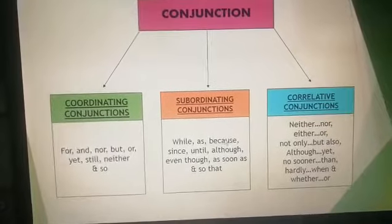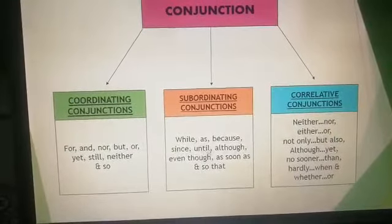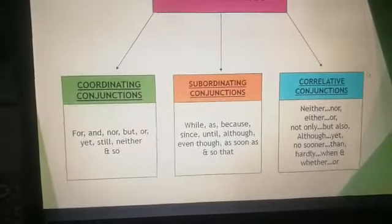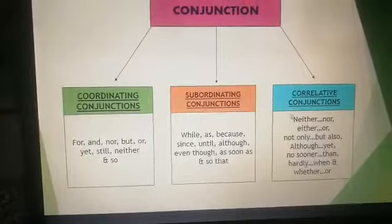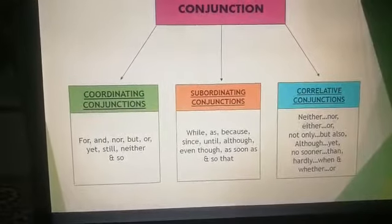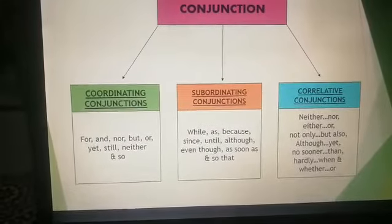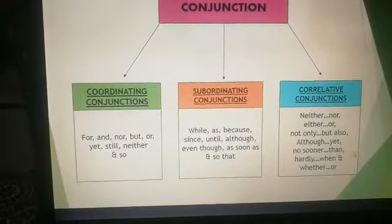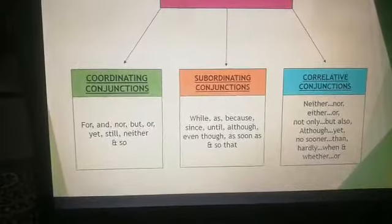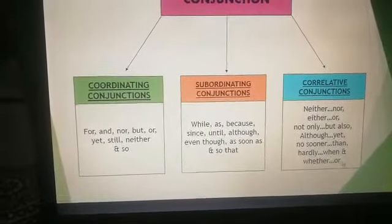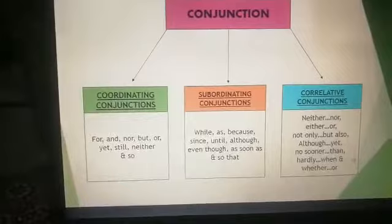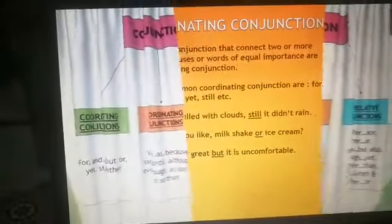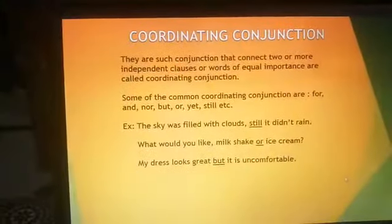Some examples of subordinating conjunctions are: while, as, because, since, until, although, even though, as soon as, so that. And some examples of correlative conjunctions are: neither/nor, either/or, not only/but also, although/yet, no sooner/then, hardly/when, whether/or. Now let's see their definitions.